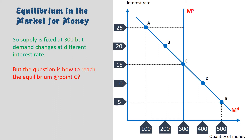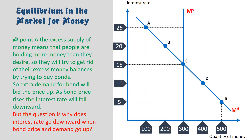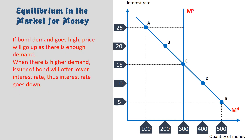The question is how to reach equilibrium point C. At point A, the excess supply of money means people are holding more money than they desire. So they will try to get rid of excess money balances by buying bonds. This extra demand for bonds will bid the price up. As bond price rises, the interest rate will fall. When bond demand is high, the price goes up, and the issuer will offer a lower interest rate, thus interest rate goes down.